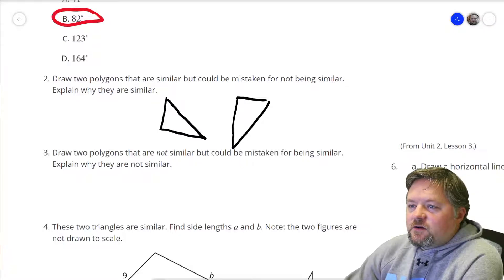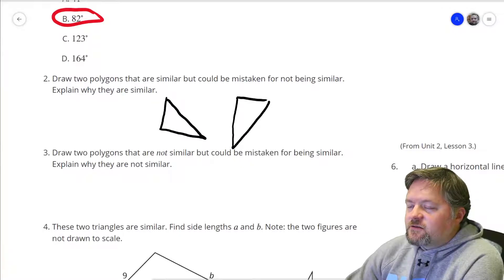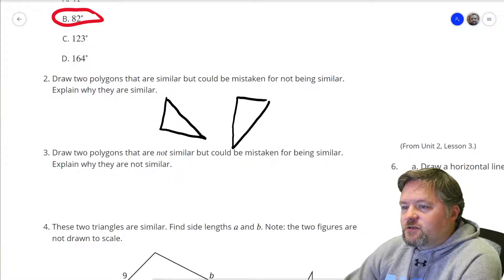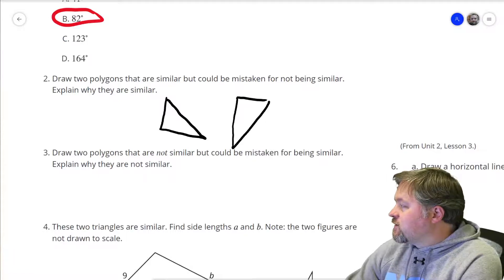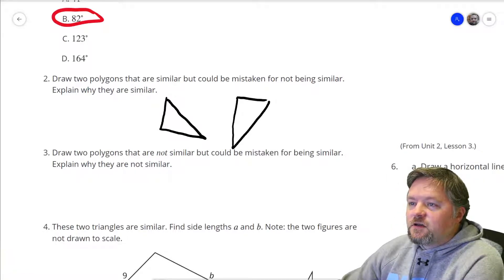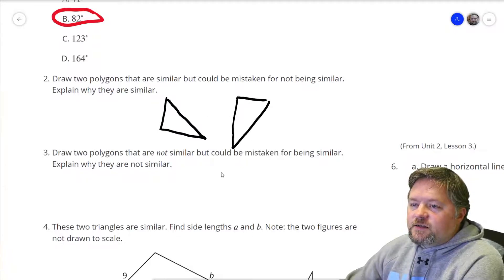Why are they similar? Well, all the side lengths and angles are the same. Those are just quick sketches. Your answer for this can vary quite a bit. It's just looking for something where the polygons are similar, but look like they could be mistaken for not being similar.